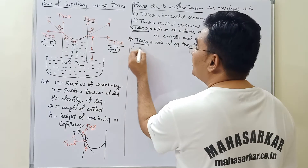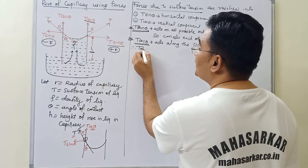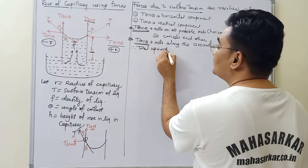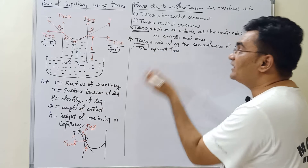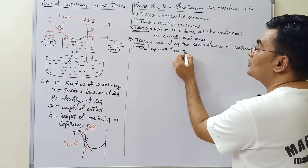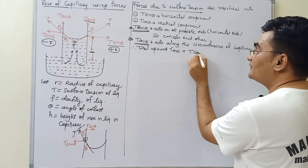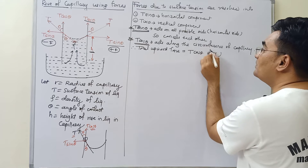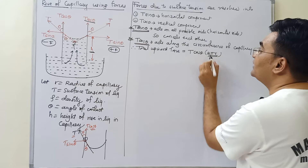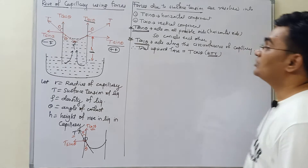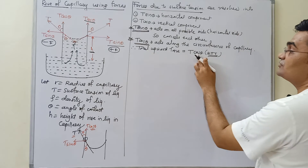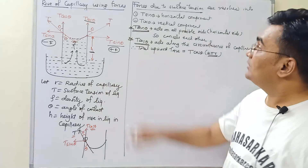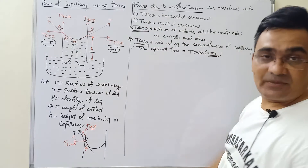The total upward force pulling the liquid is equal to T cos theta multiplied by the circumference of the capillary. Surface tension acts over the length 2πr, so total upward force equals T cos theta × 2πr.